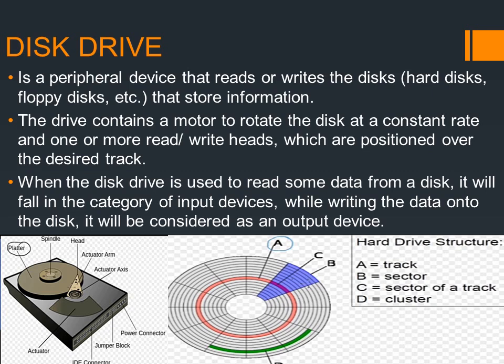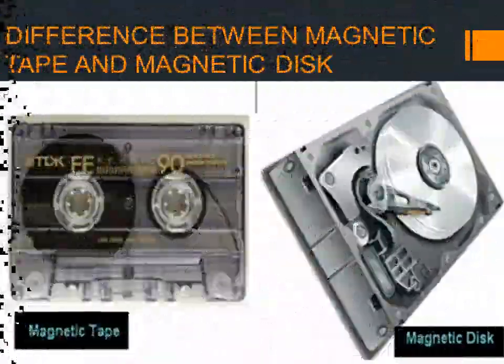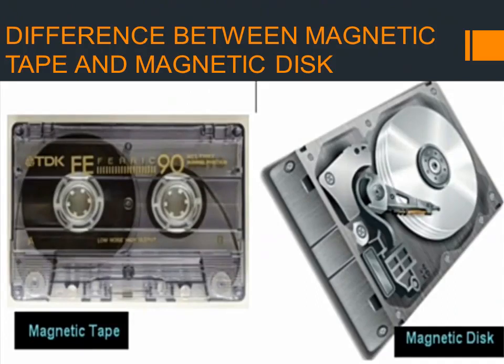Here you also see the picture of tracks, similar to what we have on a road, as well as sectors. Here is the difference between magnetic tape and magnetic disk.